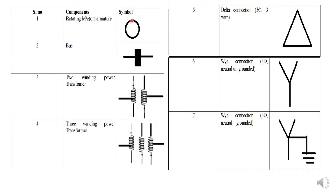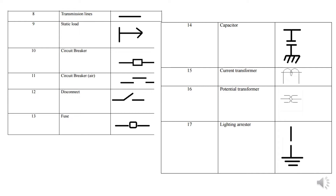The symbols used are: a circle for the generator or rotating machine armature; a line for the bus; a symbol for the two-winding transformer; and a symbol for the three-winding power transformer. Then the delta connector three-phase three-wire, Y connector three-phase with neutral ungrounded, and Y connection with neutral grounded. Also: the transmission line, static load, circuit breaker, air circuit breaker, disconnect, fuse, capacitor, current transformer, potential transformer, and lightning arrester.